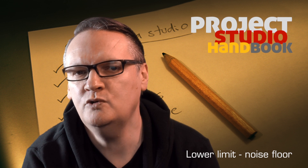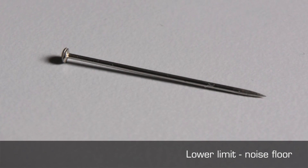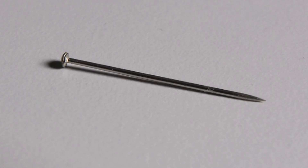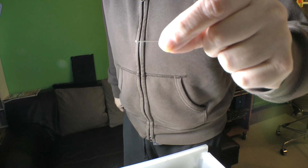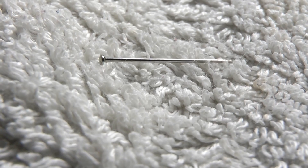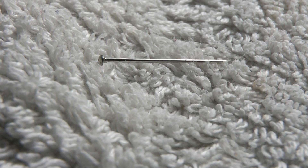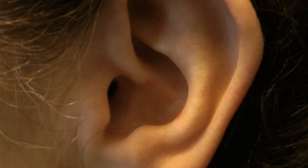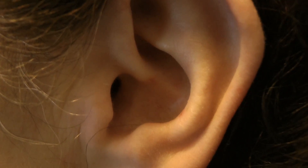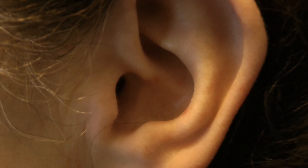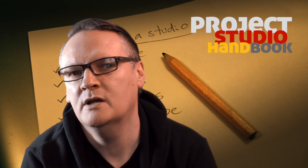Some sounds are too quiet to be heard — our sensitivity is simply not good enough. But sometimes we can't hear quiet sounds because they are masked by unwanted internal noise. This noise could be tinnitus, a symptom of hearing damage that manifests itself as a perceived ringing or high frequency tone, or it could be the noise created by blood pumping through the structures of the auditory system. Hold your hands over your ears to see what internal noise you can hear.